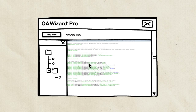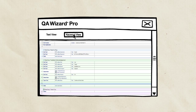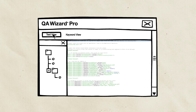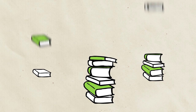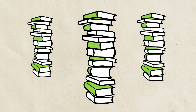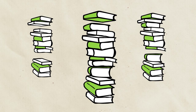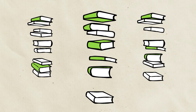And the best part of all? You can switch between keyword view and text view at any time for any script. The most time-consuming part of test automation is creating and maintaining a library of test scripts. QA Wizard Pro minimizes the need for script maintenance and makes creating duplicate test scripts for different environments a thing of the past.